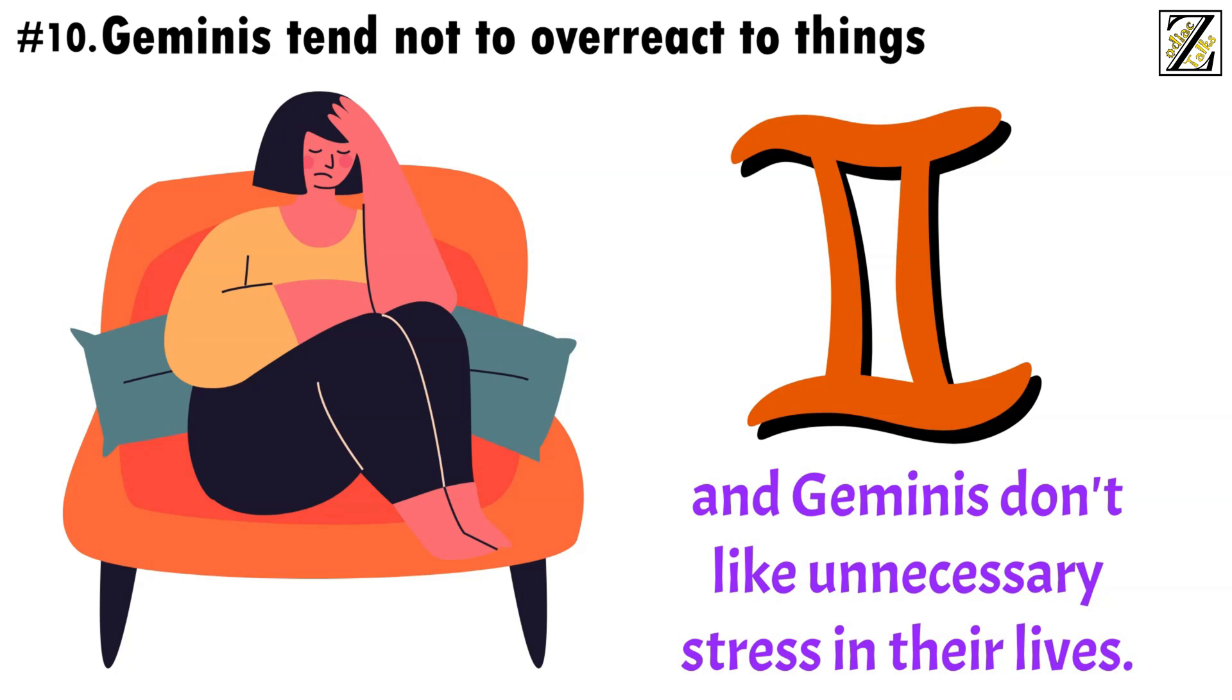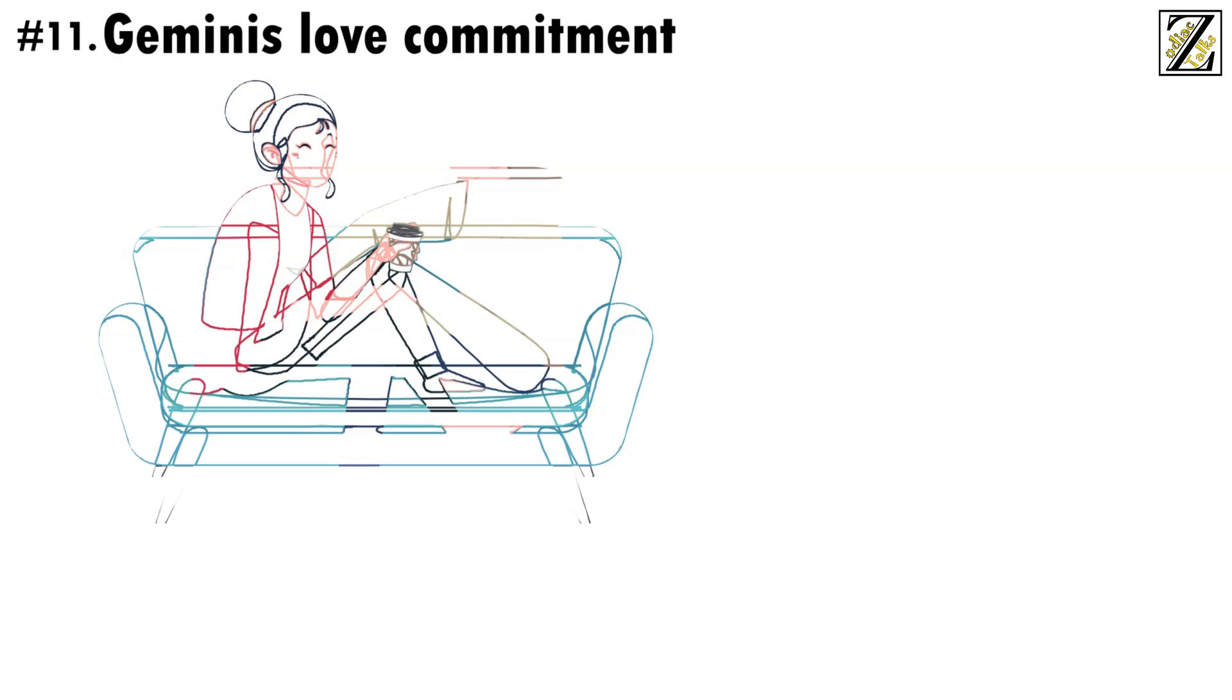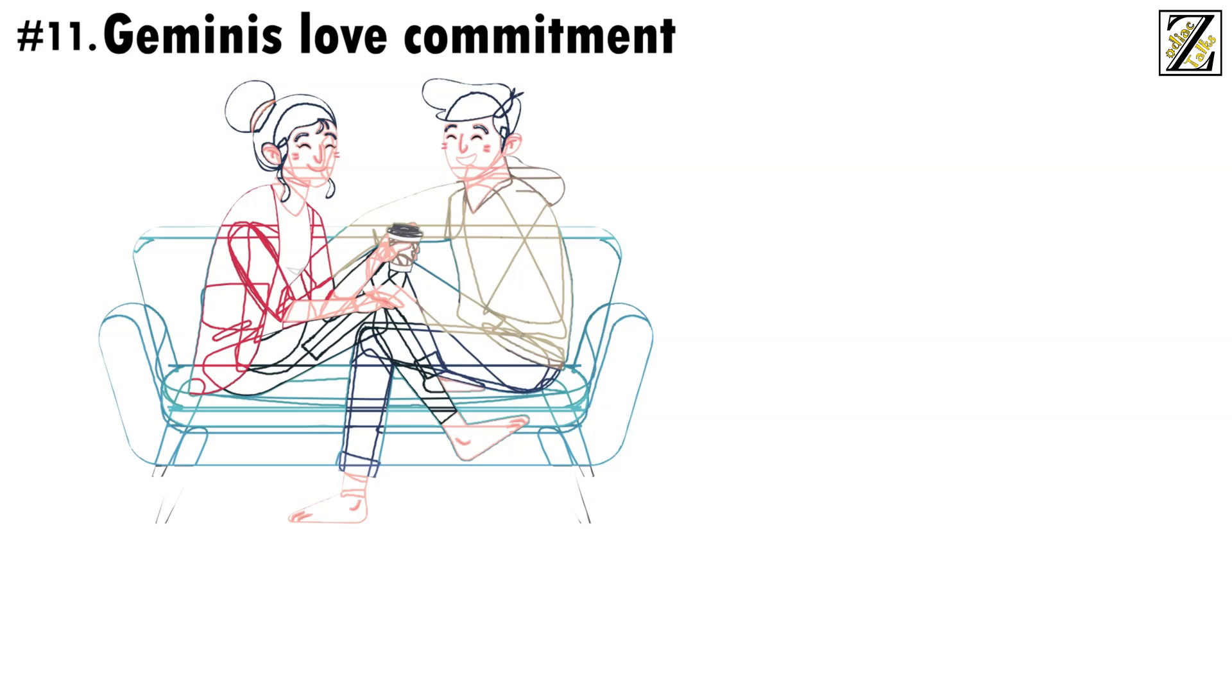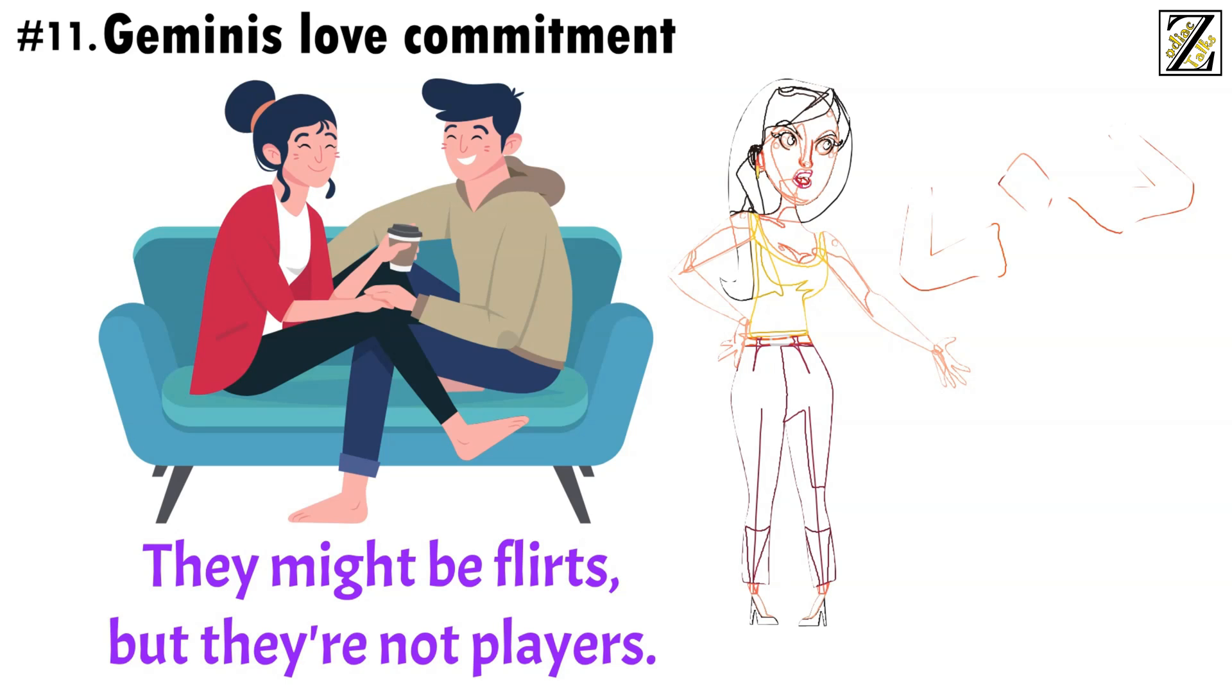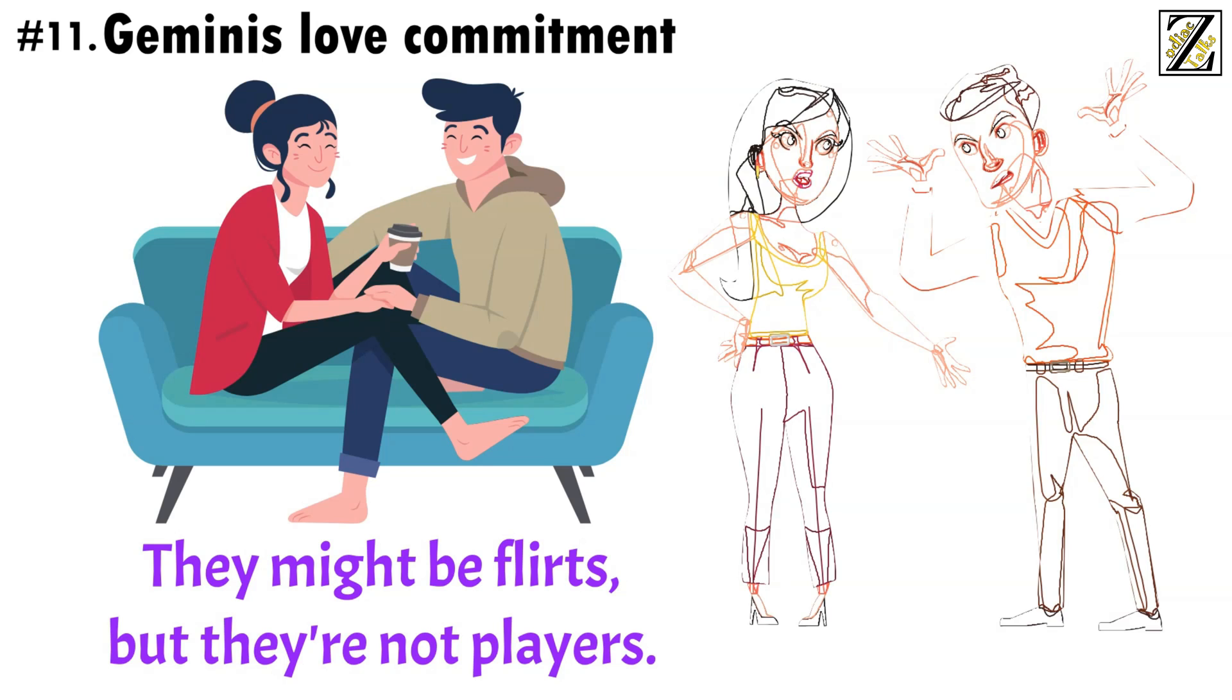Number 11, Geminis love commitment. Though they adore flirting, Geminis are big on commitment. They take relationships seriously from day one, and they don't start anything unless they're confident they want things to last. They might be flirts, but they're not players. By the same token, Geminis may be tolerant of their partner's flirting with others. But, the moment that flirting turns into something more serious, they'll call the relationship off without hesitation.